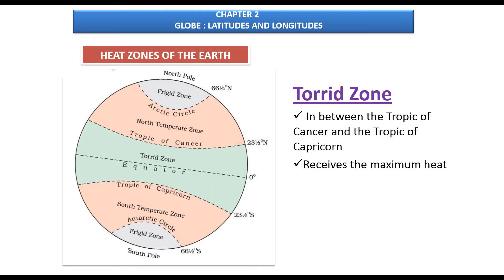Because the earth is geoid in shape, different parts receive different amounts of heat from the sun, creating various heat zones. The first is the Torrid Zone — the midday sun is exactly overhead at least once a year on all latitudes between the Tropic of Cancer and the Tropic of Capricorn. The sun's rays fall vertically on this region, so it receives the maximum heat.